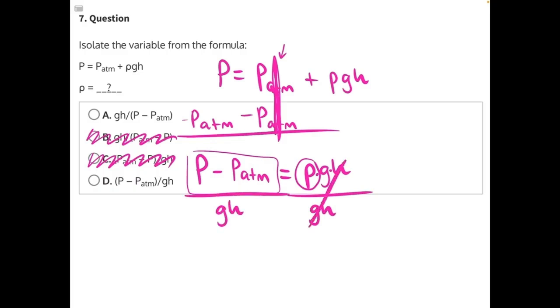When we do this, gh will cancel, leaving us with P minus P_atm all divided by gh, and that is equal to our isolated variable ρ. That makes D our correct answer.